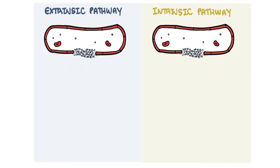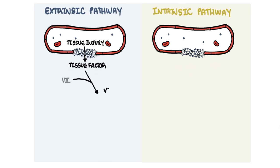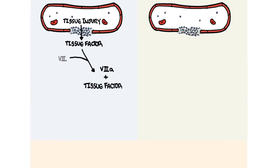In the extrinsic pathway, following platelet plug formation, tissue injury causes expression of tissue factor, which together with factor 7a will activate many molecules of factor 10 to become factor 10a.